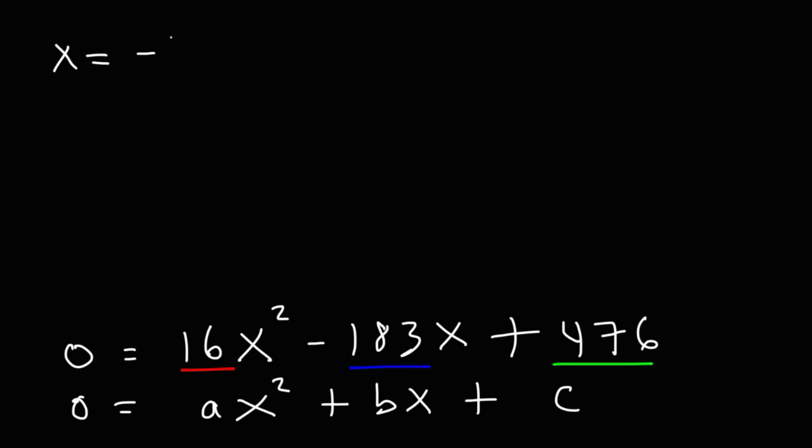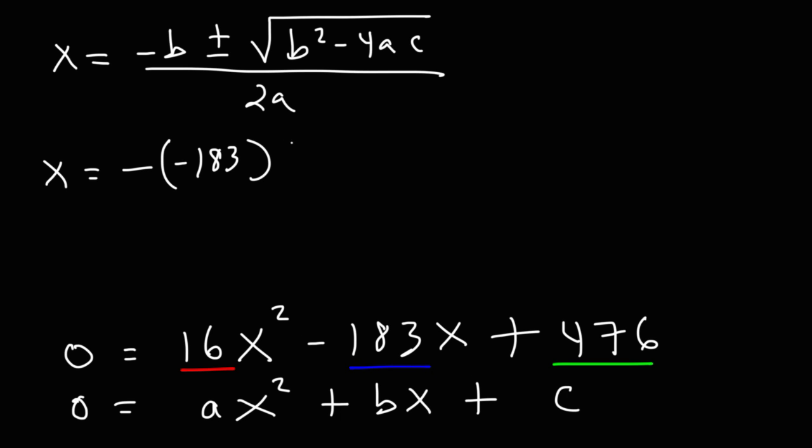So the formula is x equals negative b plus or minus the square root of b squared minus 4ac divided by 2a. So it's negative and then times b, which is negative 183.